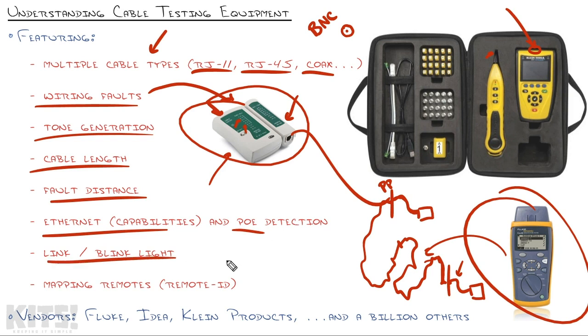Some of the testers will have the ability to link and blink the light. Meaning, in order to tone cable out, you actually have to disconnect it from the switch, which can be disruptive. So rather than doing that, you can have the network tester cause the light or the link on there to go up and down and up and down, so you can actually look at the switch and see if you see one of the lights going blink blink blink on off on off and quickly identify where it's plugged into.